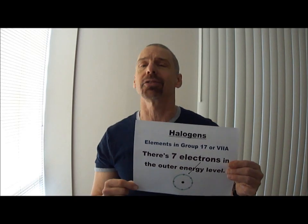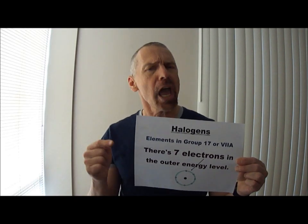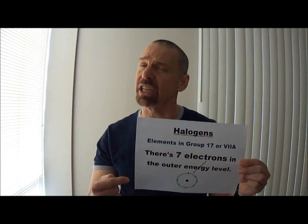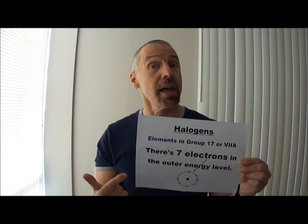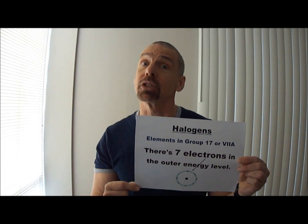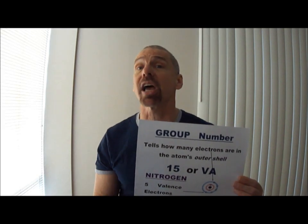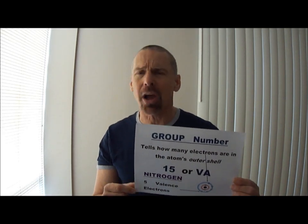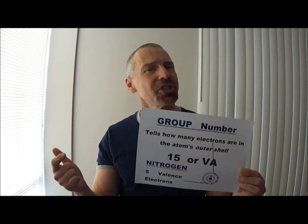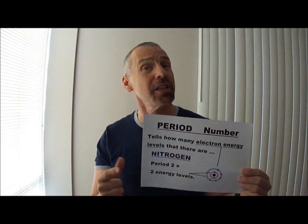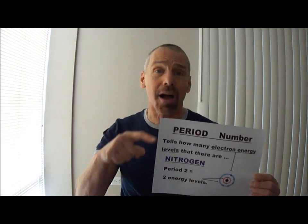The halogens — family name for elements in Group 17 or 7A. There are seven electrons present in the outer energy level. The group number tells us how many electrons are in the atom's outer shell. The period number tells us how many electron energy levels there are.